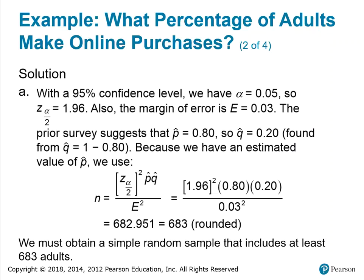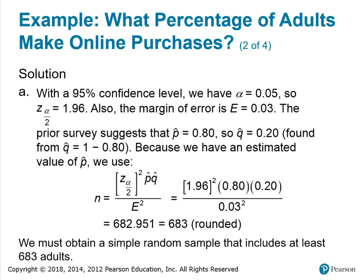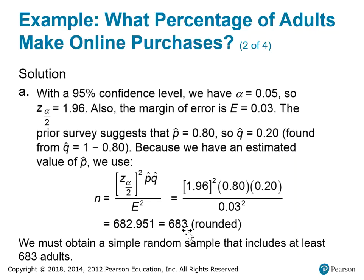The margin of error E equals 0.03, since three percentage points converts to a decimal value of 0.03. The prior survey suggests P-hat is 0.80, so Q-hat is 0.20 (found by subtracting P-hat from 1). Because we have an estimated value of P-hat, we use the corresponding formula: N equals Z sub alpha over 2 squared, times P-hat times Q-hat, divided by E squared. Substituting the values — critical value 1.96 squared, times 0.80 times 0.20, divided by 0.03 squared — we get N equal to 682.951, which rounds up to 683.